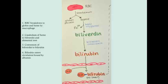The next step is bilirubin gets taken up into the circulation and is subsequently bound to albumin. Some bilirubin will be free, but the vast majority will be bound to albumin, because bilirubin itself is not water-soluble, so it needs to be bound to a protein in the blood. When we talk about pathologic jaundice, if there's not enough albumin in the blood, then you're going to have a lot more circulating free bilirubin, and that's going to come into play when we talk about bilirubin encephalopathy and kernicterus.